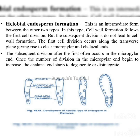Helobial endosperm is an intermediate type between cellular and nuclear. Cell wall formation follows after the first division, but subsequent divisions do not lead to cell wall formation. The first cell division occurs along the transverse plane, giving rise to a micropylar and a chalazal cell. Subsequent divisions often occur in the micropylar end, and as divisions there increase, the chalazal end starts to degenerate. This type of endosperm formation generally occurs in monocots.